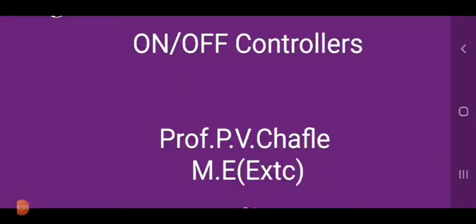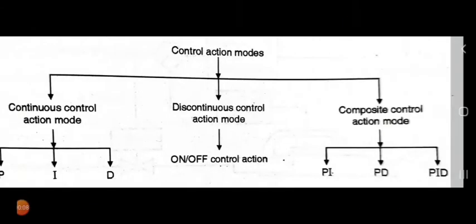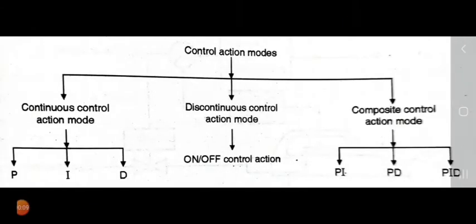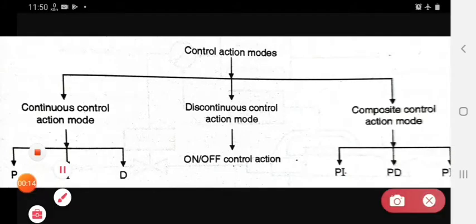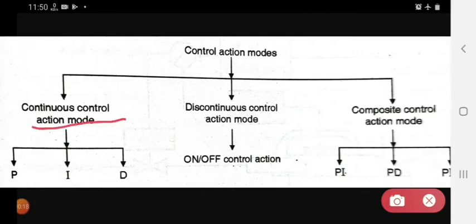Today we see the next topic, which is the on-off controller. Firstly, we see the classification of control action modes. In classification of control action modes, there are three types: continuous control action mode, discontinuous control action mode, and composite control action mode.